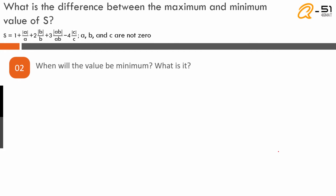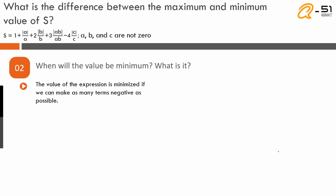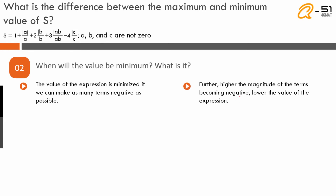We will find out when S will be minimum. It is going to be minimum if we can make as many terms negative as possible. If we cannot make all terms negative, we should make those with a higher magnitude negative. C must be positive for the expression to be minimum: since the fourth term already has a negative coefficient (−4), making |C|/C = +1 (C positive) makes that entire term negative.